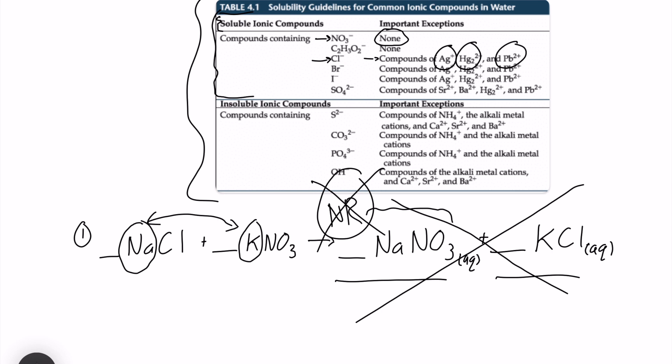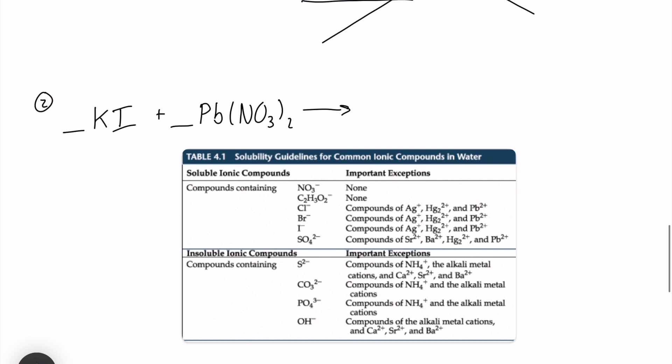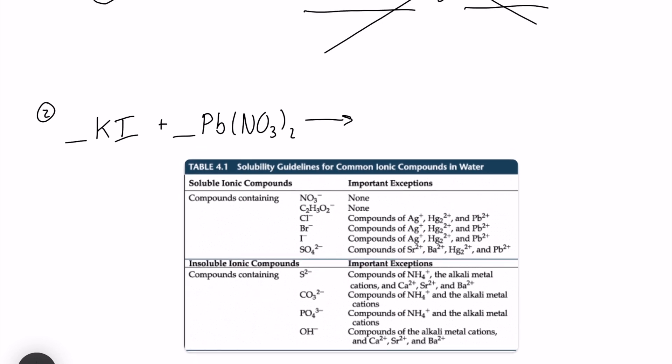So remember, when we're doing these double displacement reactions, one of our products has to be a solid, liquid, or gas. Usually the liquid is in the form of water. But when we're working with these ionic compounds, we're basically looking for solids. Okay, so let's move on to number two. We have potassium iodide reacting with lead-2 nitrate. So our lead-2 and our potassium will be switching places.